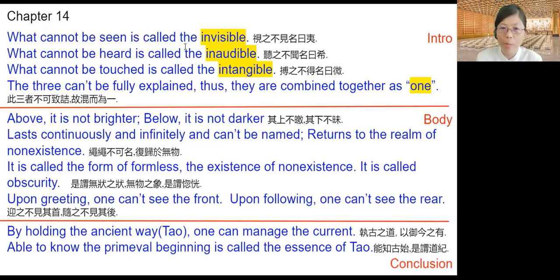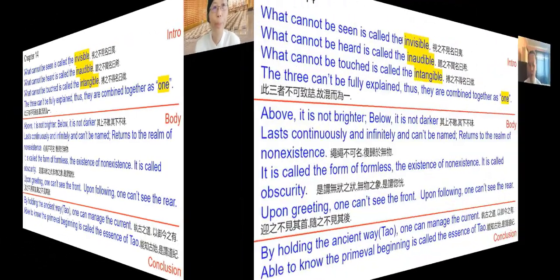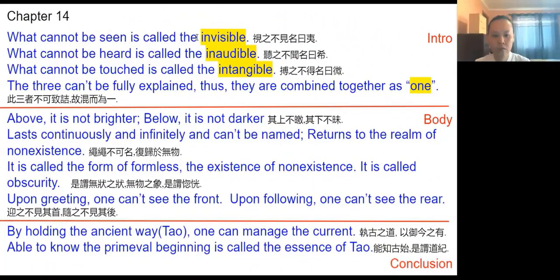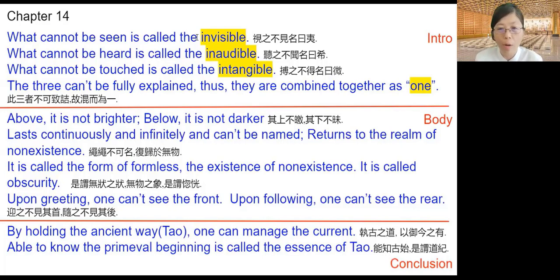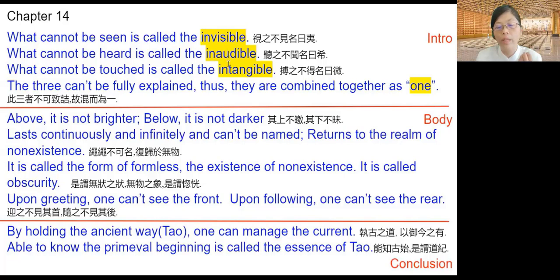I was thinking about invisible, inaudible, and intangible — but these three are not really enough. If we think about it, ghosts fall into this category. Coronavirus falls into this category. Therefore, these three are not enough to describe Tao, because many things invisible, inaudible, and intangible to human perception will fall into this category.